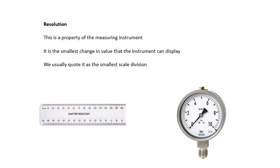So for example, this pressure gauge has a resolution of 0.2 bar, 0.2 times 10 to the 5 Pascal. This ruler here has a resolution of 1 millimeter. So resolution is a property of the measuring instrument and it's the smallest change that it can display, the smallest scale division.